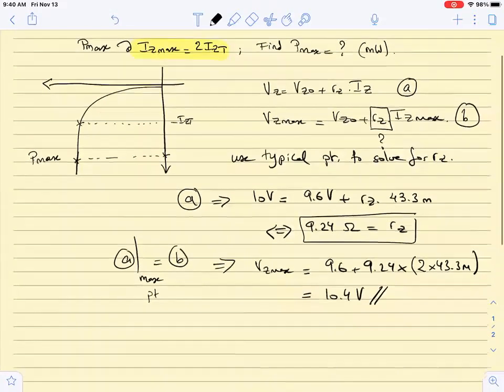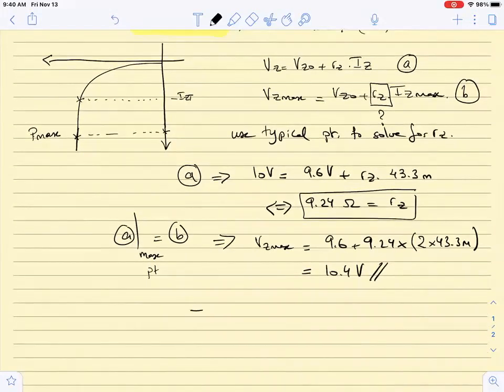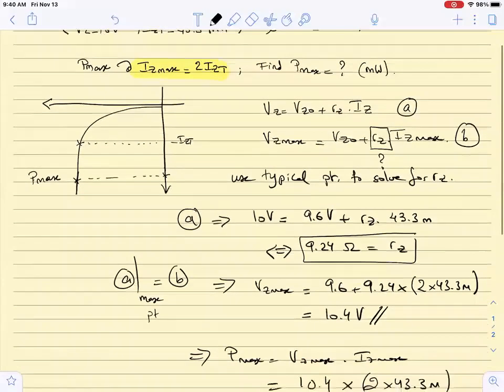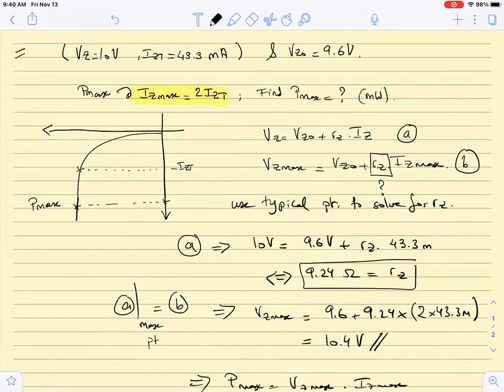Once I find Vzmax equal to 10.4 volts, then I can say Pmax is now equal Vzmax times Izmax. And this is 10.4 times 2 times 43.3 milli because this is the current. And we end up finding that Pzmax is 900.6 milliwatts. So this is an example problem number one for the diodes from the short quiz.